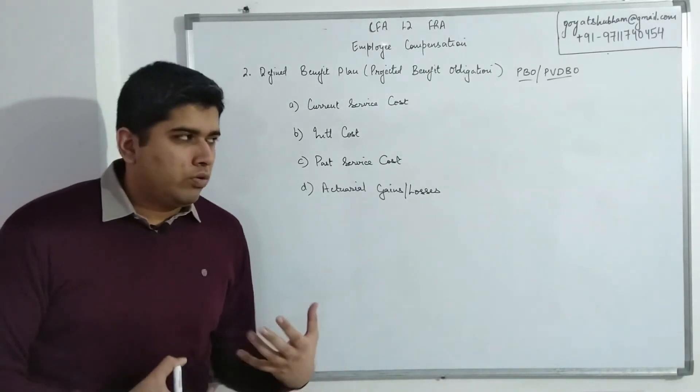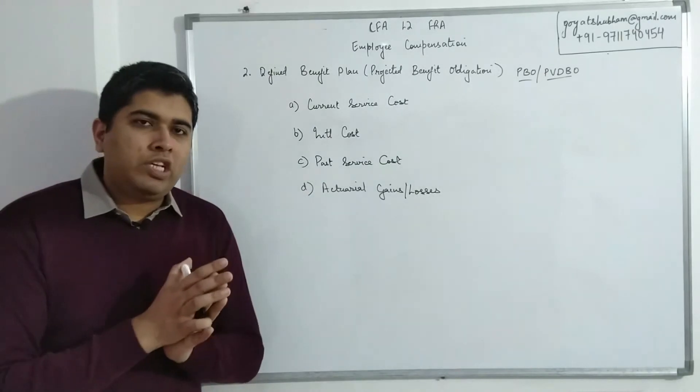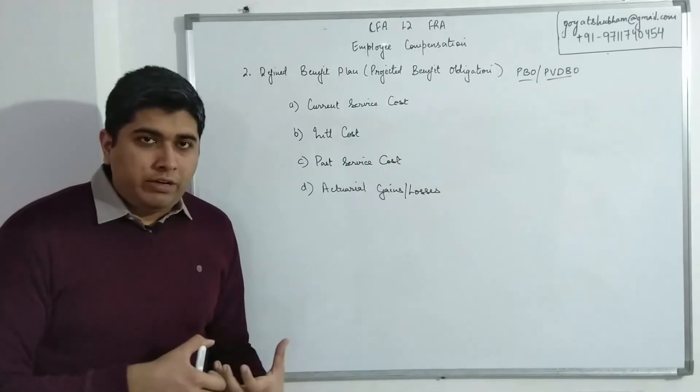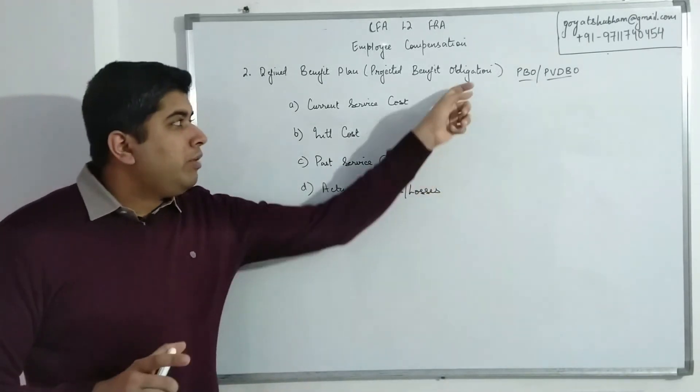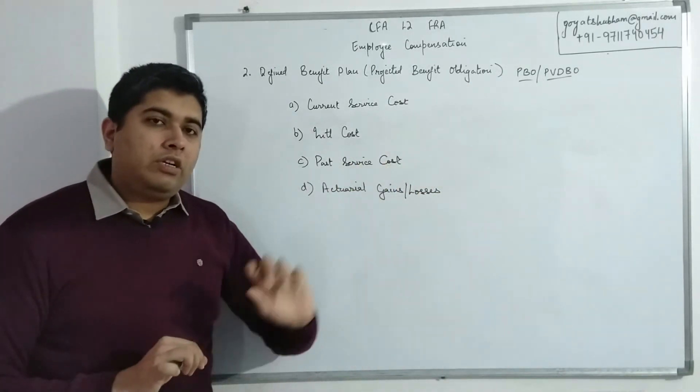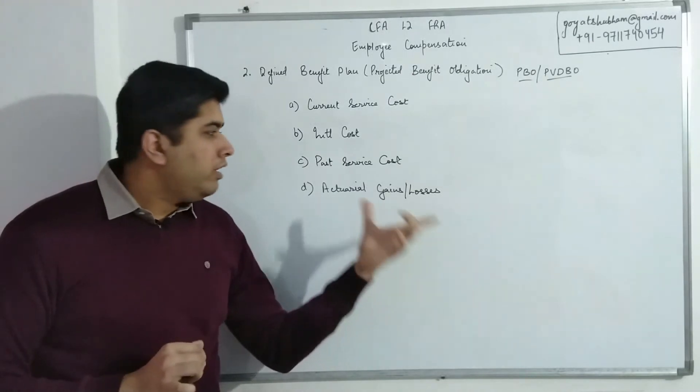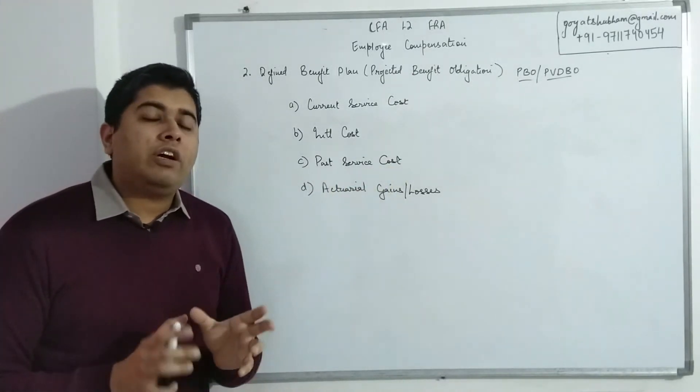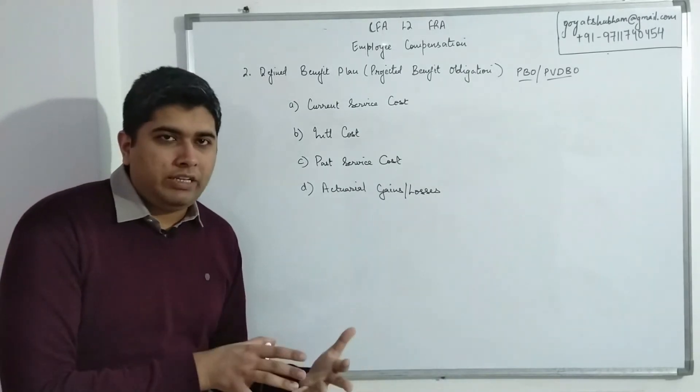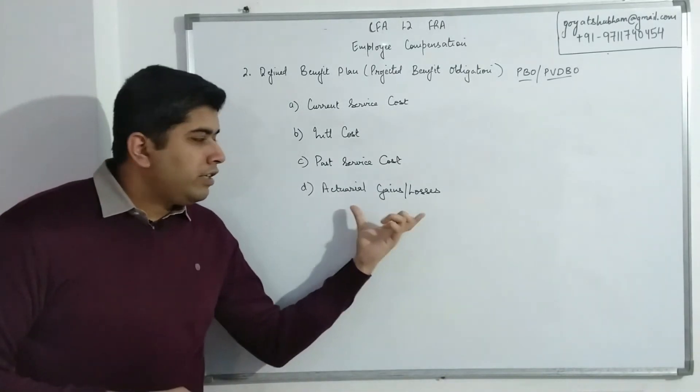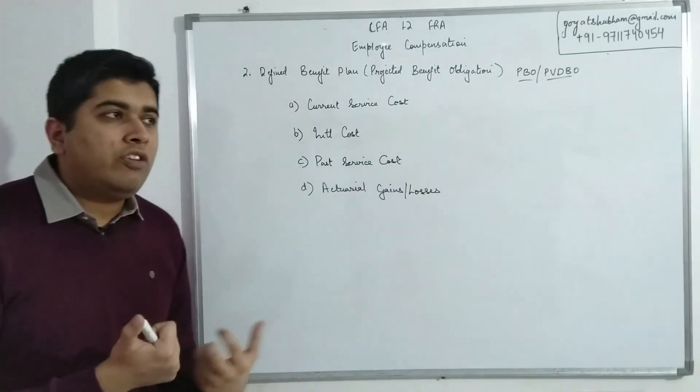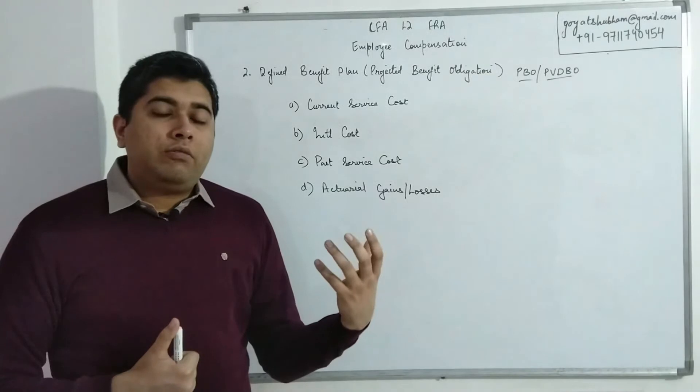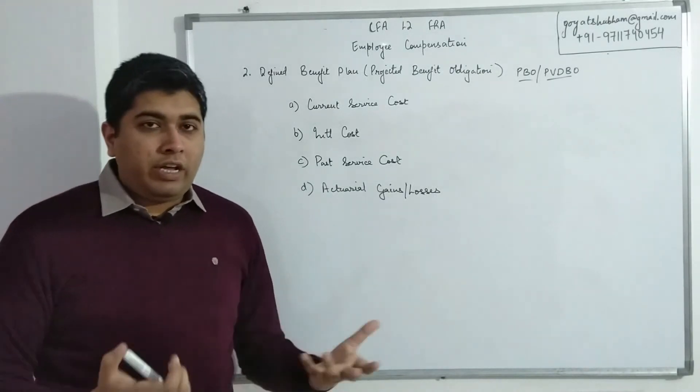Past Service Cost simply relates to any adjustments made to the pension plan. So when I have a pension plan, I have some terms and conditions that, okay, this is the basis on which I will do the calculation for how much pension an employee will receive. If there are some changes made to that, any change in the obligation happening because I have changed the terms and conditions of my pension plan, that is known as Past Service Cost. So this is associated with any changes or amendments made in the pension plan itself.